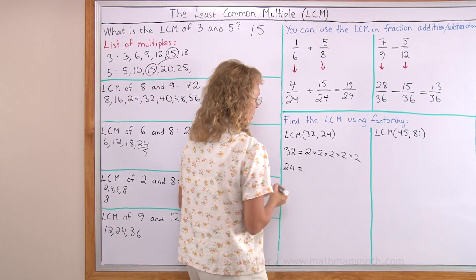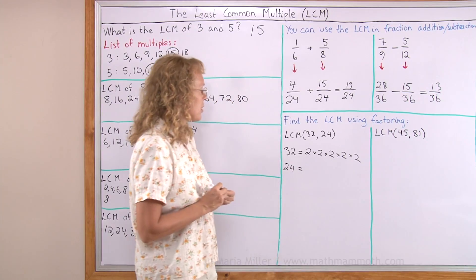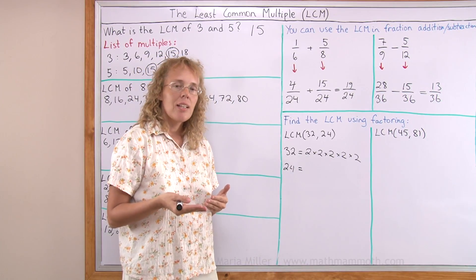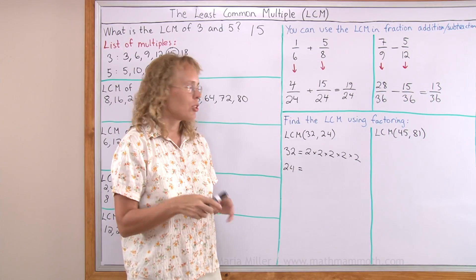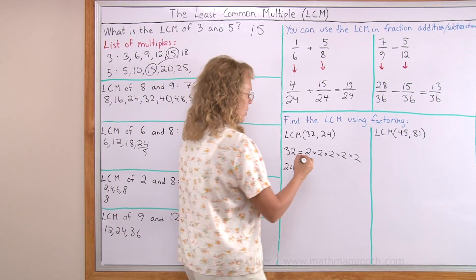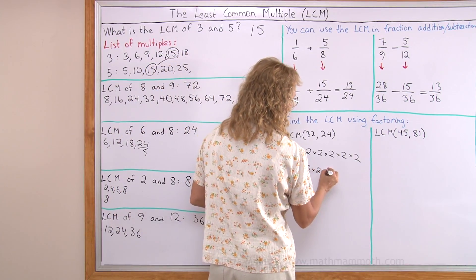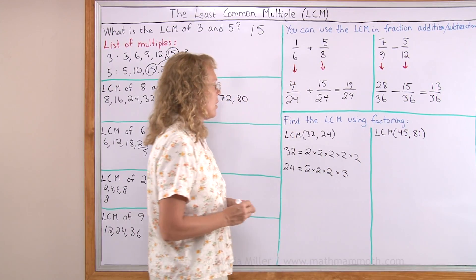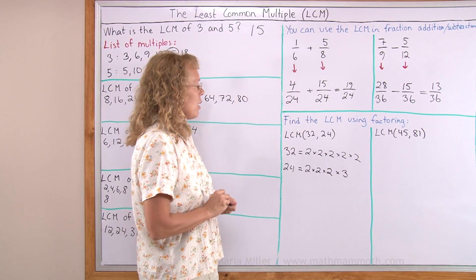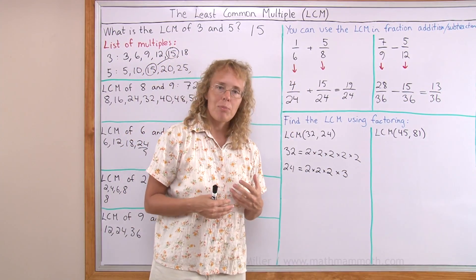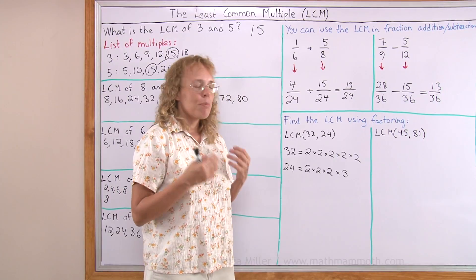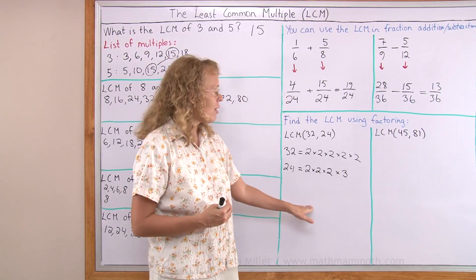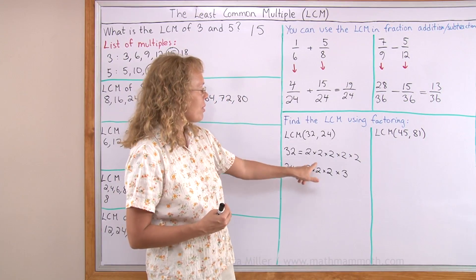Now 24 is pretty easy too — it is 3 times 8, and 8 is 2 times 2 times 2. So we get 2 times 2 times 2 times 3. And now, to find the least common multiple, we basically need to make a prime factorization that includes both this and this.